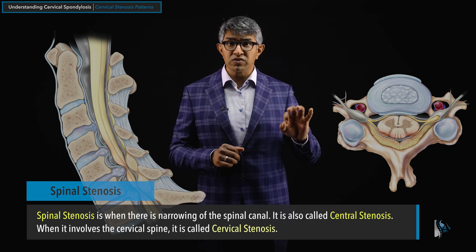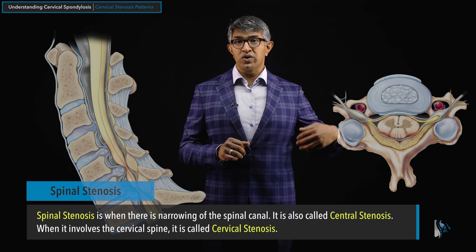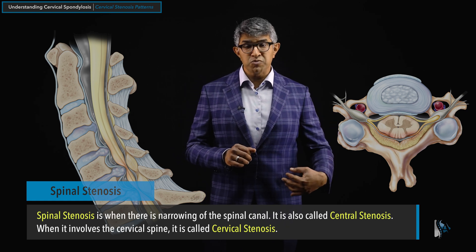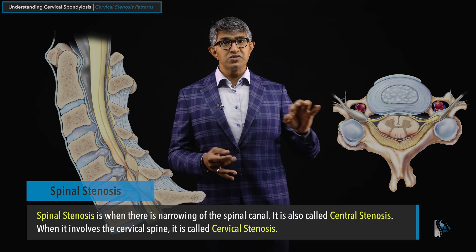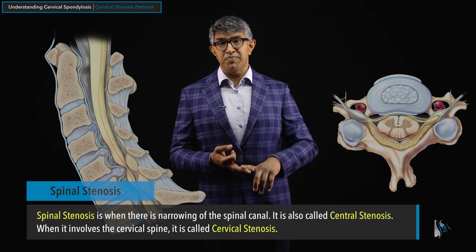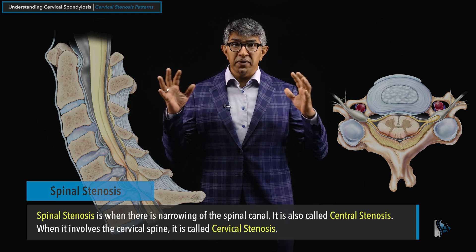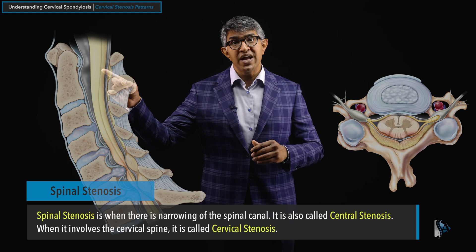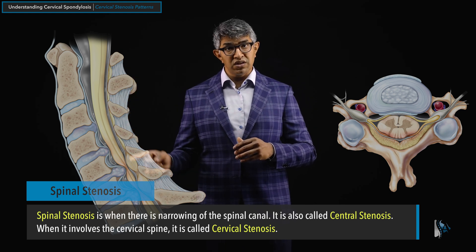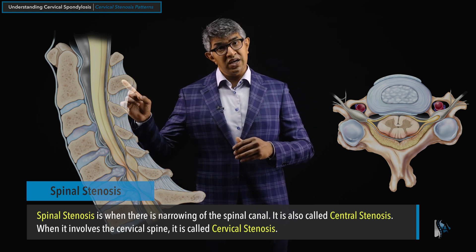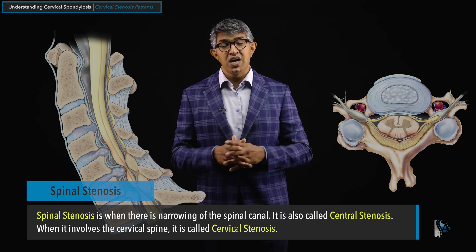When stenosis affects the cervical spine, we call it cervical stenosis — just as when it affects the lumbar spine, we call it lumbar stenosis. Cervical stenosis, central stenosis, and spinal stenosis are all roughly interchangeable, but they refer to narrowing of the space that runs longitudinally the length of your spine, containing the spinal cord and, lower down, the spinal nerves.